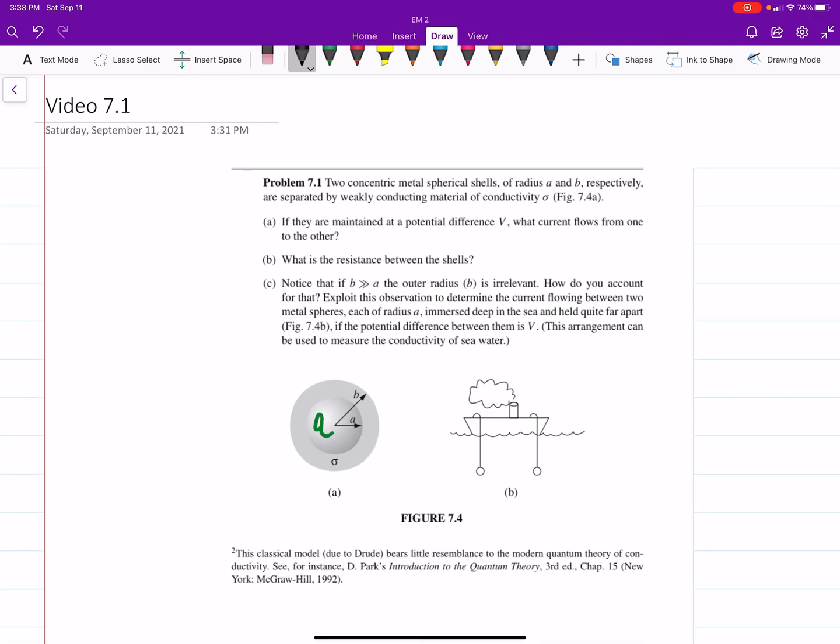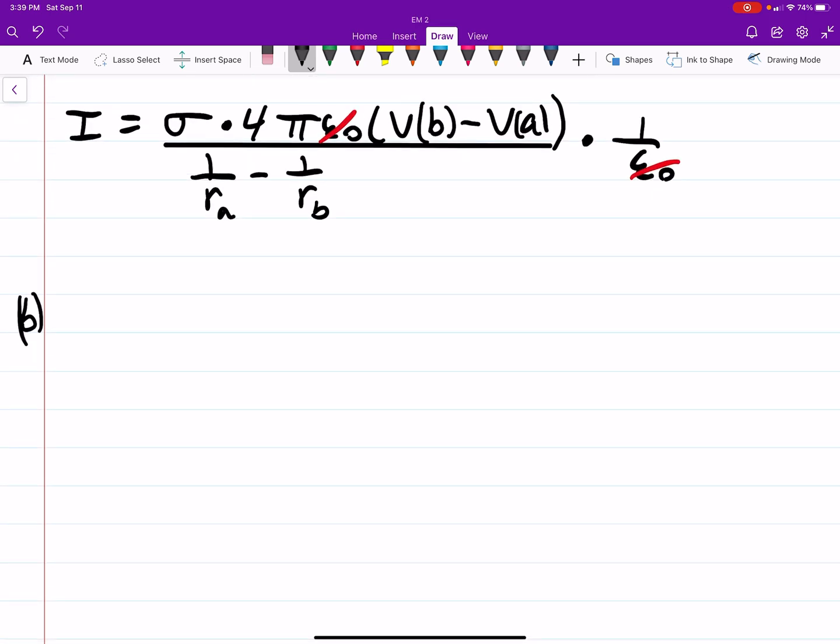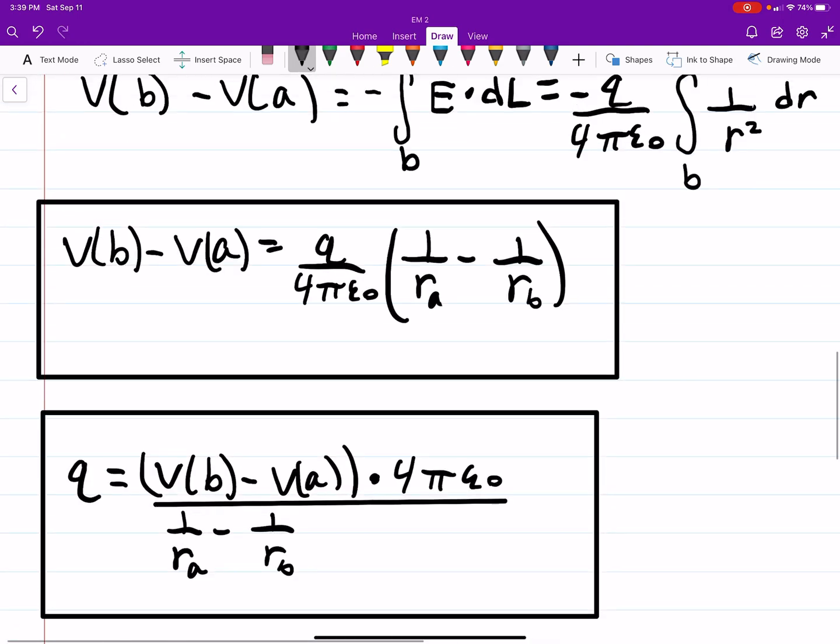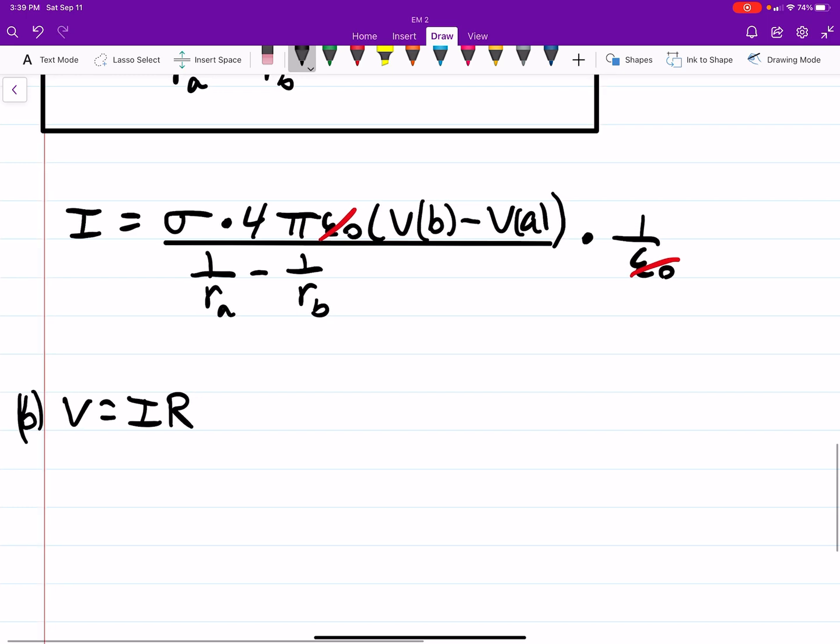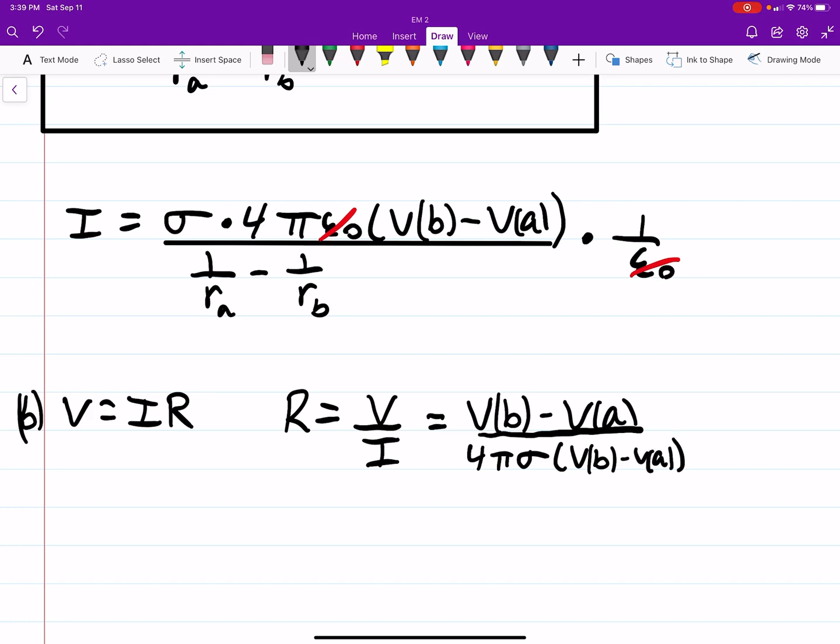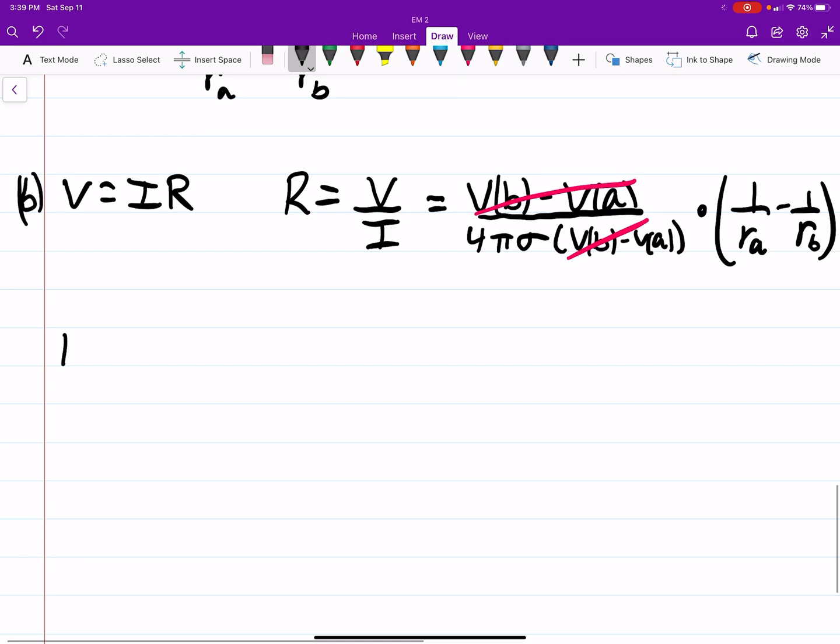So, then if we go up to B, what is the resistance between the two shells? So, the resistance, we can actually use Ohm's law. V equals IR. That was also Ohm's law up here. This is also Ohm's law. But this is the more familiar Ohm's law. And, obviously, R, then the resistance, is equal to the potential over the current. And we know what those two things are. This is our potential. Divided by 4 pi sigma. V at B minus V at A. Times 1 over RA minus 1 over RB. And, you can see the potential is actually not mattering here. So, then you get R is equal to 1 over 4 pi sigma times 1 over RA minus 1 over RB.